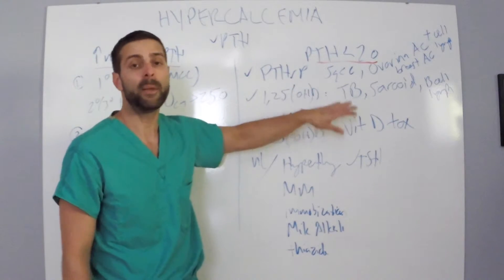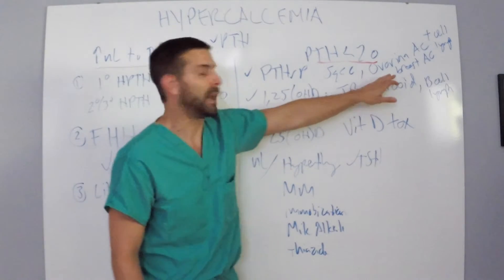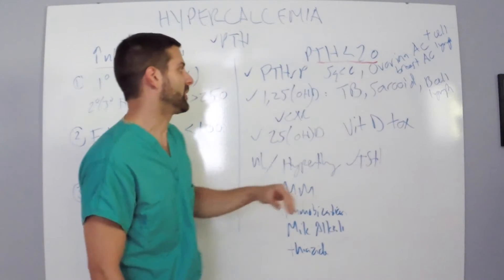They're probably going to give you in the vignette somebody who's been losing weight, somebody with a tobacco history, somebody with an abnormality on their mammogram, things of that nature.